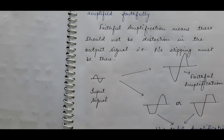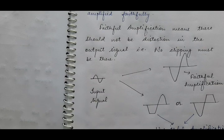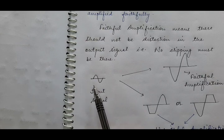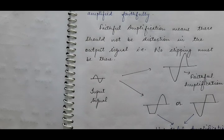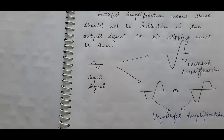And what we do not expect is that our output signal comes with distortion. What can happen is clipping — clipping of the negative peak may happen, clipping of the positive peak may also happen. And this is known as unfaithful amplification.